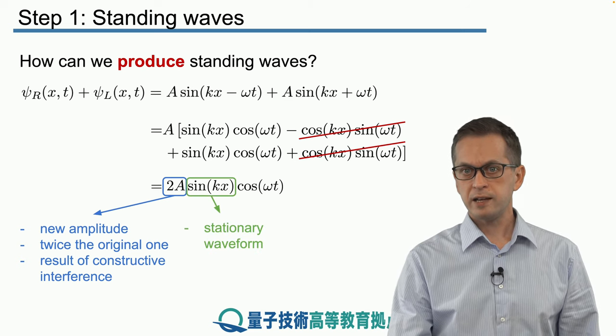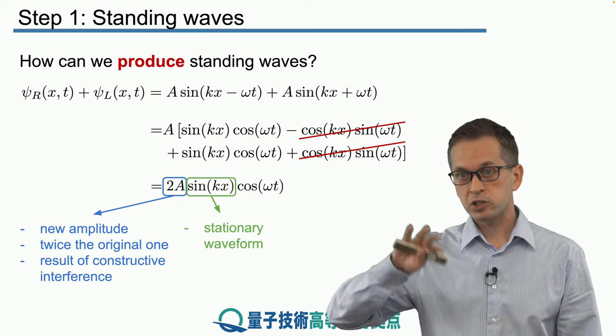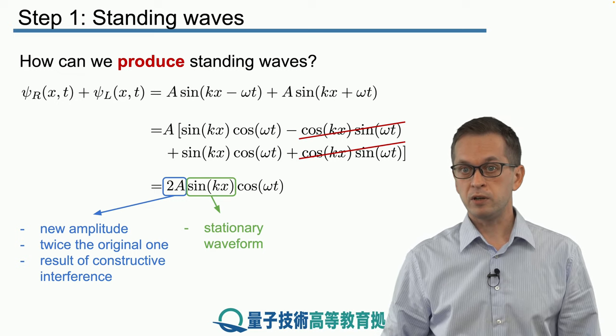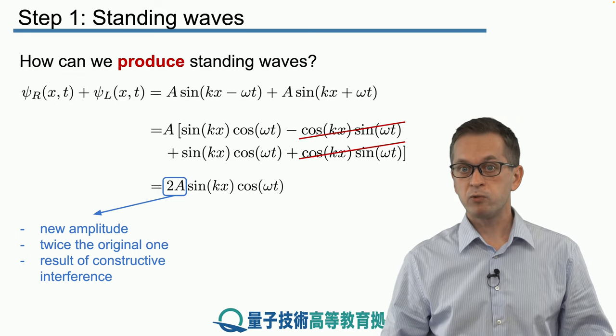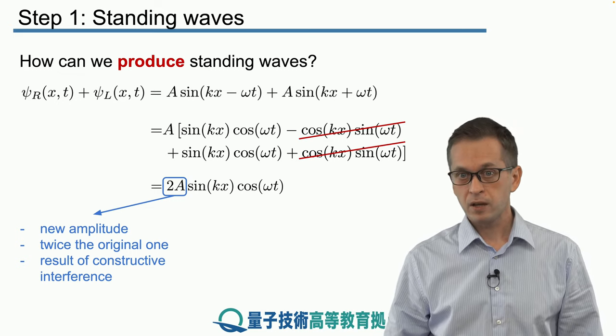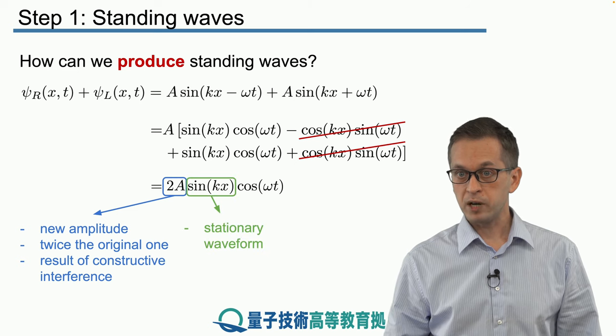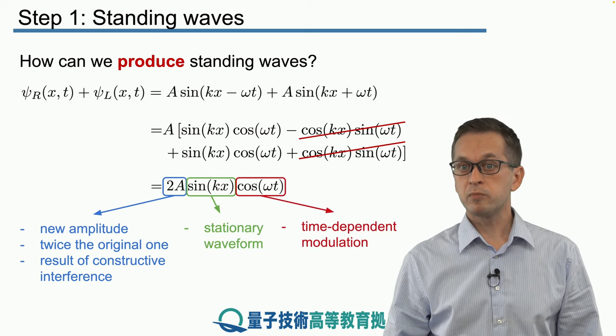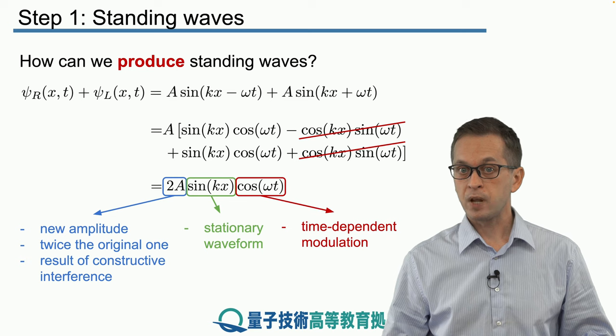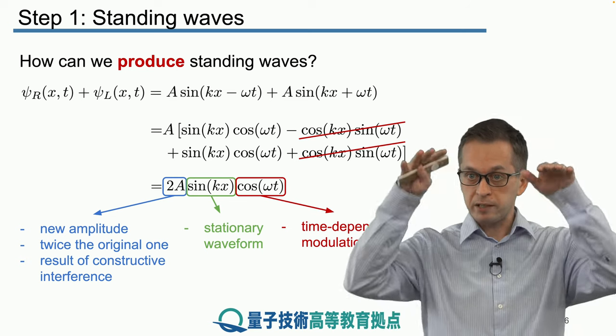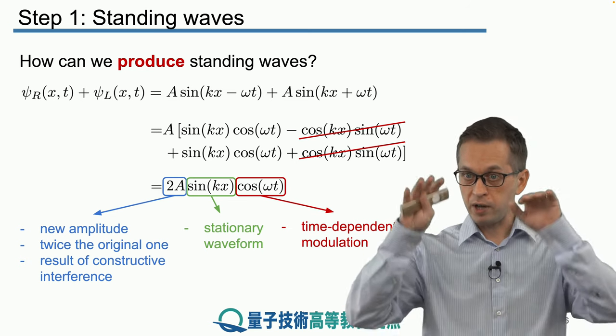The second term, kx, is giving us the spatial variation of the wave and gives us the stationary waveform. While the time component given by cos omega t is really just modulating our amplitude. So this is what makes the wave go up and down.